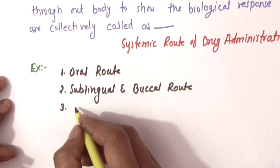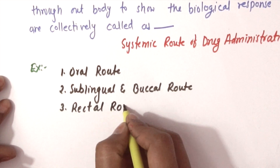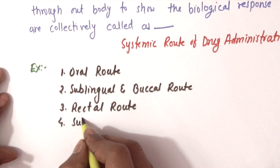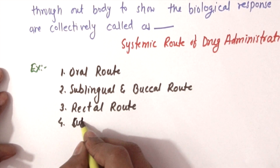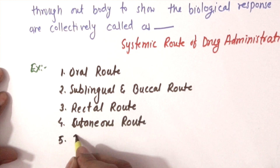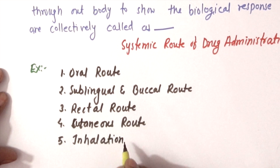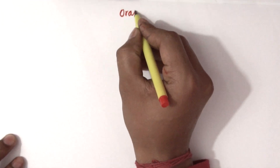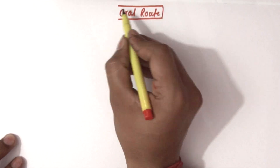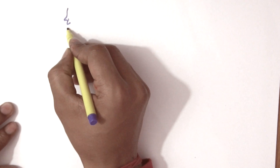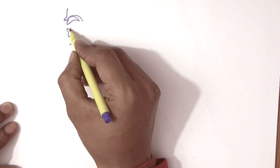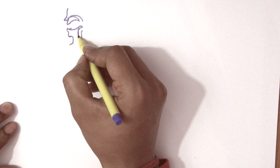These are collectively called systemic routes of drug administration. Examples include oral route, sublingual route, buccal route, rectal route, cutaneous route, and inhalation route.